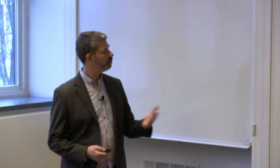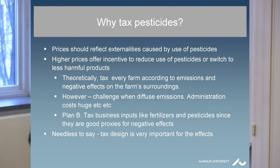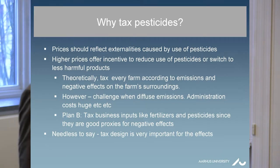So why is it that we should tax pesticides? As you know, probably prices should reflect the externalities which are caused by the pesticides. So if there's a higher price, it gives an incentive to reduce the use of pesticides or switch to less harmful products. Theoretically, of course, it would be optimal if we could tax each and every farm according to how much they emit, but that's very difficult because it's a challenge when we have diffuse emissions like the ones from agriculture.